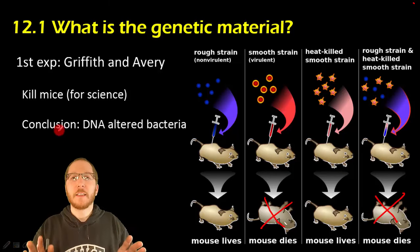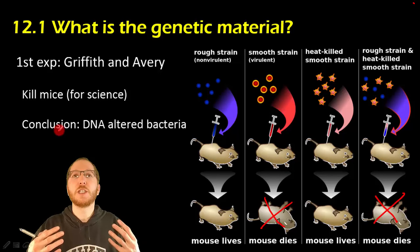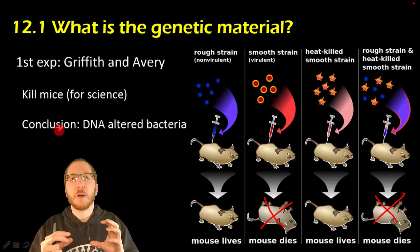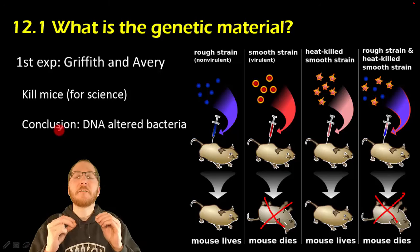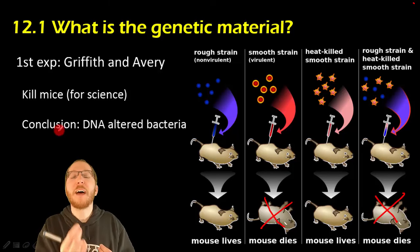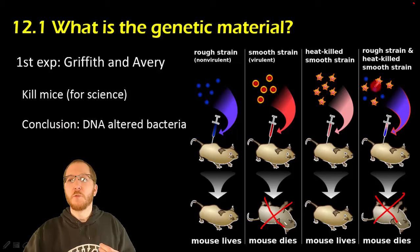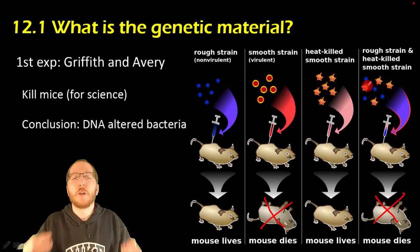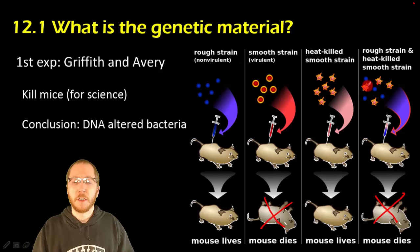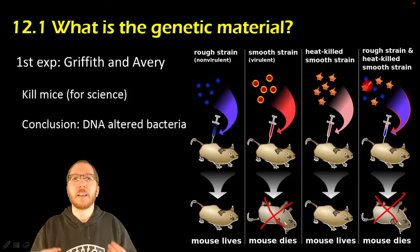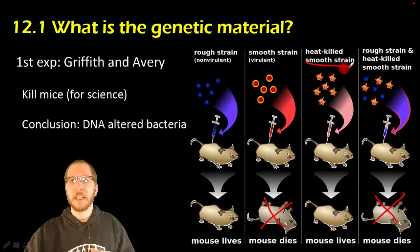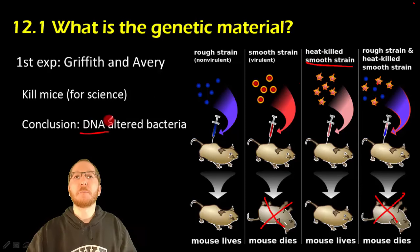Then Avery said: if you heat up proteins, they denature — they break down, they change shape, they no longer are what they were before. So if you heat-kill the smooth strain, any genetic information stored as protein would have been destroyed. The rough bacteria couldn't have grabbed the genetic material coding for being smooth, because the heat would have destroyed it. DNA, however, is much more resistant to temperature. So at that point, if you heat-killed it, DNA could still be around with the proper coding information. Avery deduced that DNA must be the genetic material, because only DNA would withstand the heat applied to kill those smooth strain bacteria.